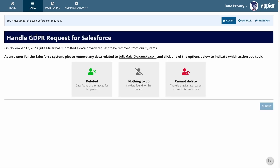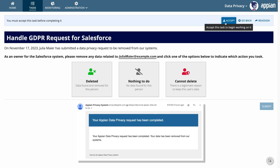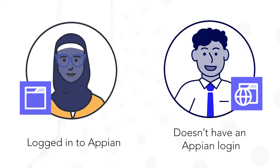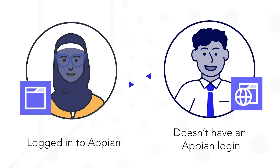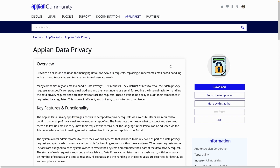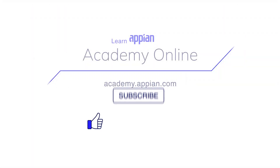Once all tasks for a request are completed, the system will send the original requester an email letting them know the result of the request. In this way, Appian handles the full cycle from unauthenticated user request, authenticated user task management, and notification back to the unauthenticated user. Sites and portals work together to connect both logged-in users and users without Appian accounts to application data and processes in a cohesive user experience. You can explore this workflow yourself with the Appian Data Privacy Utility — get it on the Appian App Market.